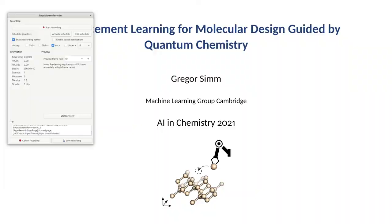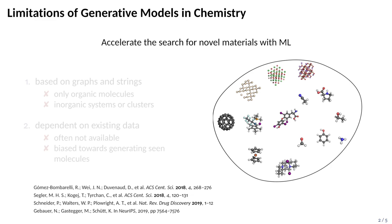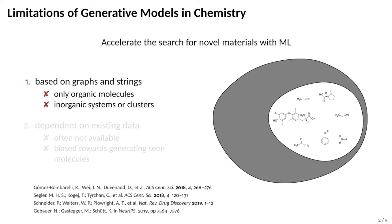My name is Kieran Sim and today I would like to talk about our work on reinforcement learning for molecular design guided by quantum chemistry. The overarching goal of this line of work is to accelerate the search for novel molecular structures with machine learning. Currently, so-called generative models in chemistry suffer from two key limitations. First, they are based on graph and string representations of molecules; as a result, they lack 3D information—the position of atoms in space—and can only generate single organic molecules. Inorganic systems and molecular clusters remain out of reach. Second, they strongly depend on an existing dataset. Unfortunately in chemistry, such datasets are typically not available.